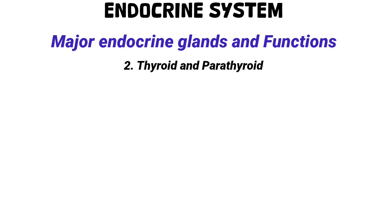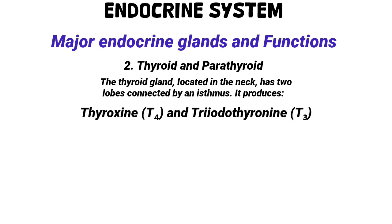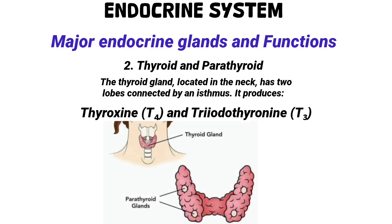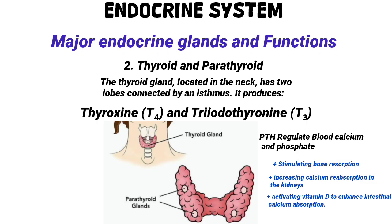Number two: the thyroid and parathyroid glands. The thyroid gland, located in the neck, has two lobes connected by the isthmus and produces thyroxine, which is T4, and triiodothyronine, which is T3. These hormones increase metabolism, promote tissue growth, and help regulate blood pressure. Behind the thyroid are four small parathyroid glands, which secrete parathyroid hormone, also called PTH. PTH regulates blood calcium and phosphate levels by stimulating bone resorption, increasing calcium reabsorption in the kidneys, and activating vitamin D to enhance intestinal calcium absorption.